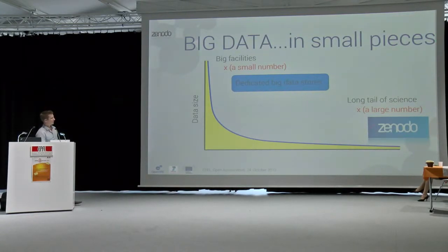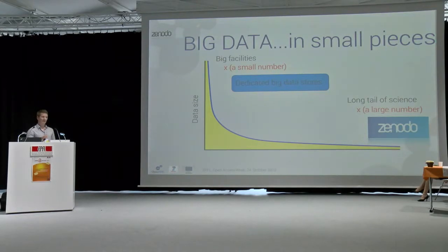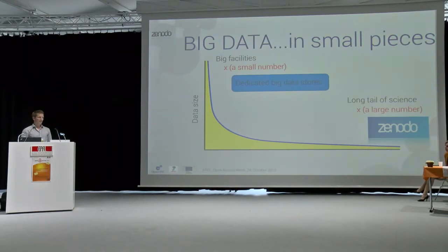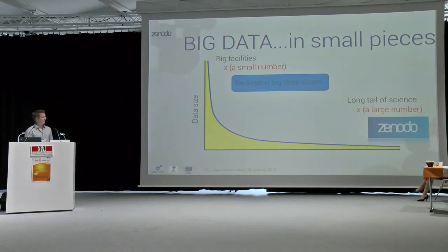If we look at the other end of the spectrum, we have the long tail of science — researchers distributed over the world, producing data that they are writing their articles based on. If you're lucky, you have a subject-based data repository where you can put your dataset. You might also be very lucky to have an institutional data repository. However, it's very likely that your dataset is sitting on your local hard drive, in Dropbox, or on your website. This is not really good for preservation because when your hard drive fails or you move institutions in five years, the data is gone — it's basically lost.